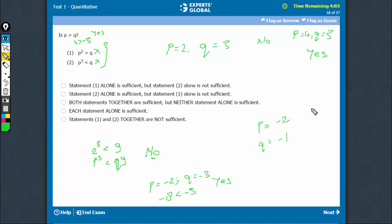So yes, 4 is greater than 1. Statement 1 is fulfilled here and P³ is less than Q. So -8 is less than -1. Both conditions are fulfilled, but in this case P is less than Q.